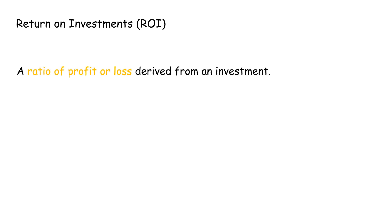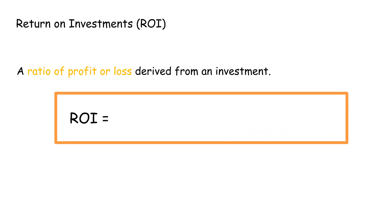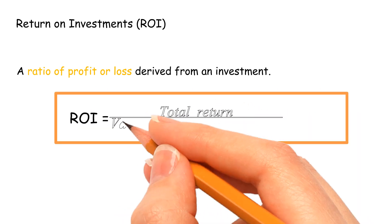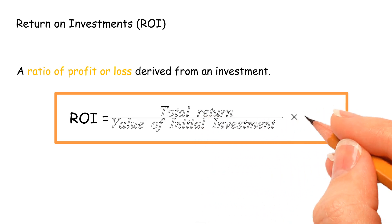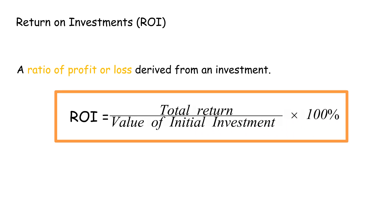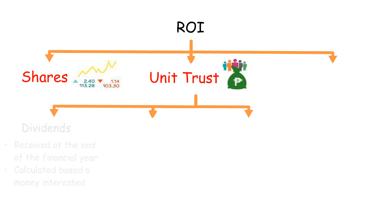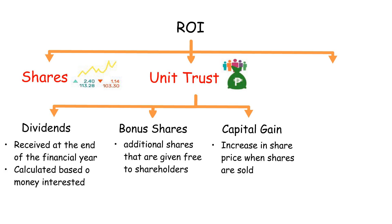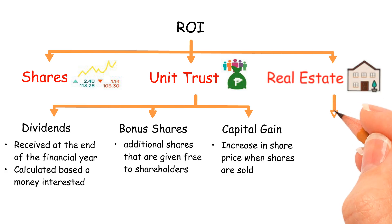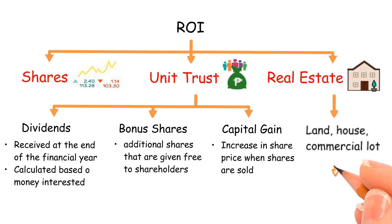Now, let me introduce Return on Investment (ROI). ROI is a ratio of profit or loss derived from an investment. ROI equals total return divided by value of initial investment, times 100%. The return of unit trusts includes dividends, bonus shares, and capital gain. The return of real estate — land, house, and commercial lot — includes rent or capital gain.